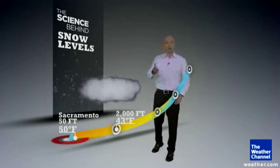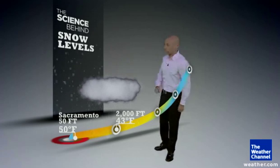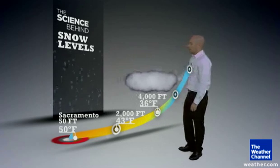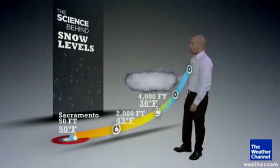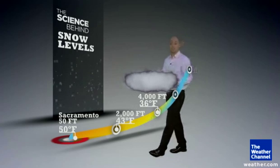Kind of like driving north — if you go up a mountain, you're cooling down too. Let's look a little bit further up: 4,000 feet now. You're down to 36 degrees.